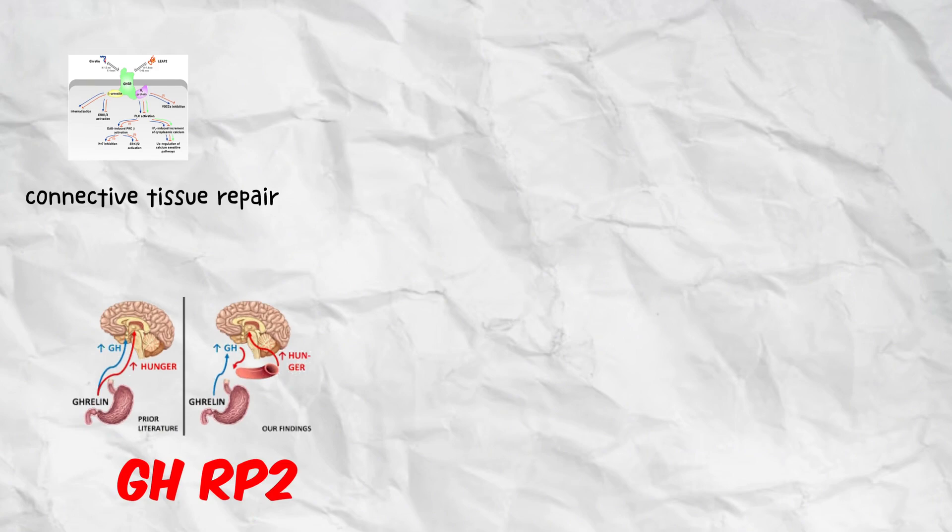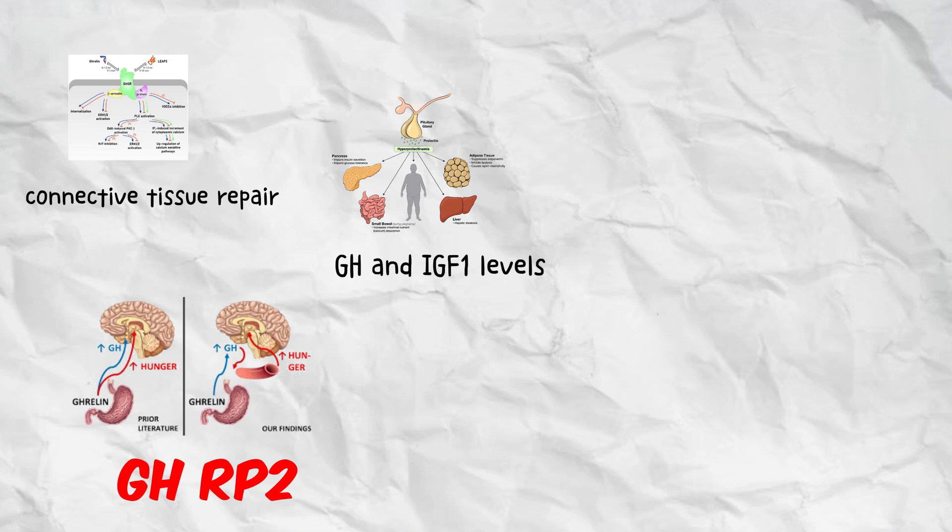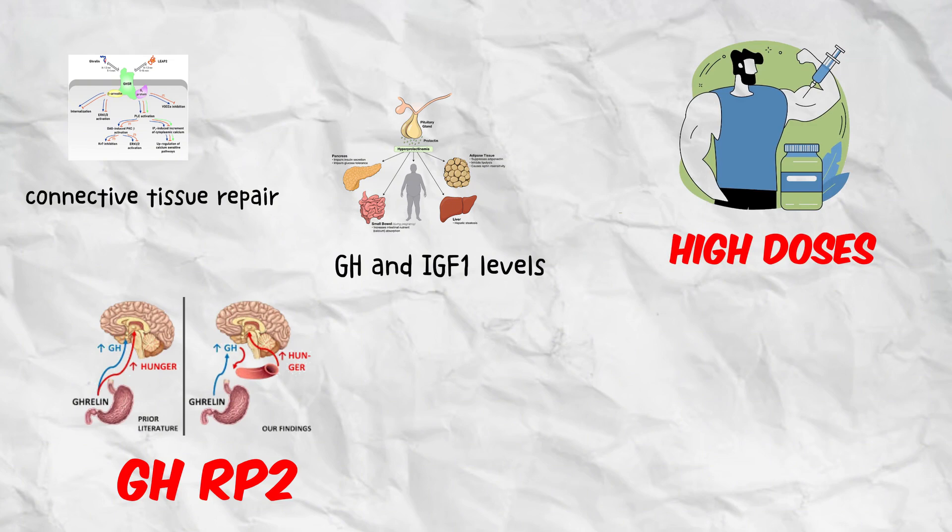Compared to other GH secretagogues, GHRP-2 moderately increases appetite and improves sleep quality due to its effect on GH and IGF-1 levels. However, it can slightly elevate cortisol and prolactin, especially with high doses, which may reduce anabolic benefits if misused.